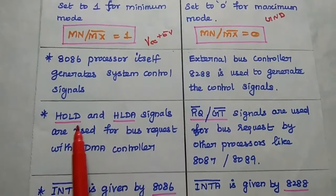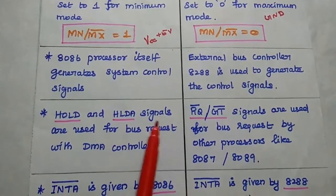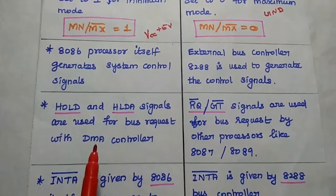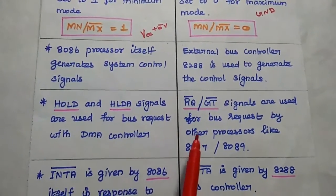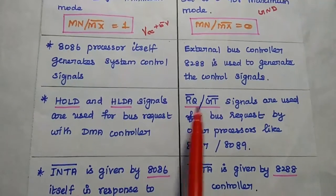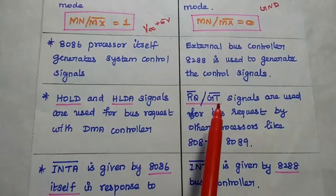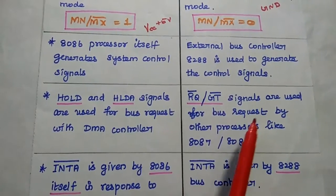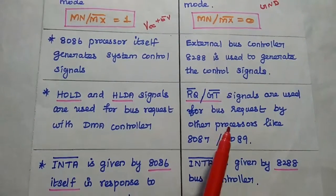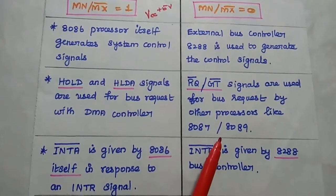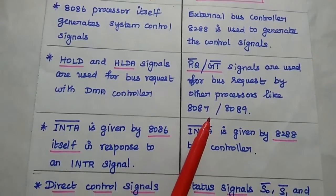HOLD and HLDA signals are used for bus requests with DMA controller. In maximum mode, request bar grant signals, that is RQ bar/GT bar signals, are used for bus requests by other processors like 8087 or 8089.